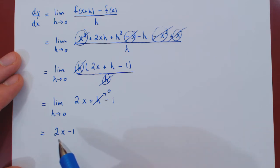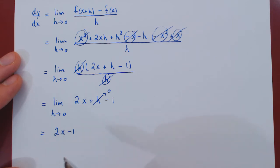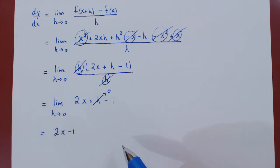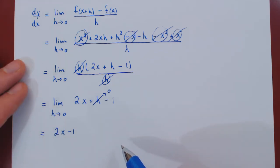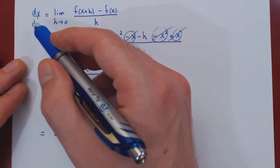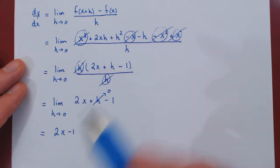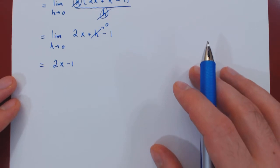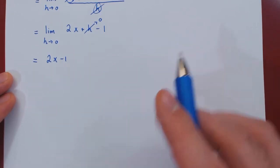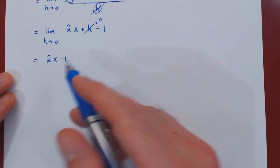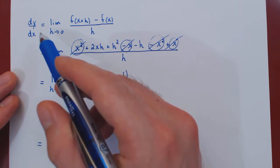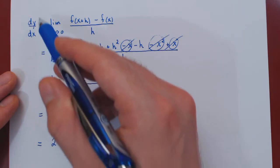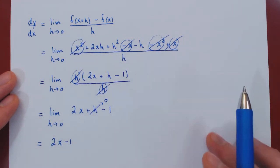This says that for any given value of x, the slope of the curve is 2x minus 1. The slope of the curve is the derivative, which geometrically is also the slope of the tangent line.